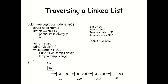After that, temp is assigned temp->link, so the new value of temp becomes 300. Now temp->data becomes 12 and temp->link becomes null, as we are now at the last node. It simply prints temp->data which is 12, and then assigns temp->link — which is null — to temp.